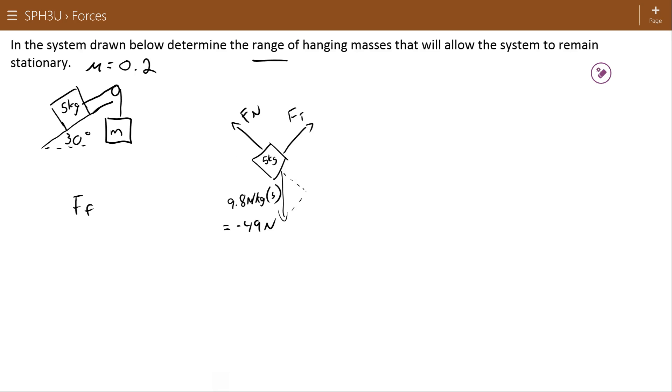Let's first get these exact values. The angle here is 30 degrees. So negative 49 newtons sine 30 works out to negative 24.5 newtons.